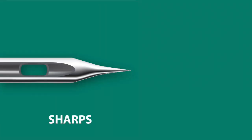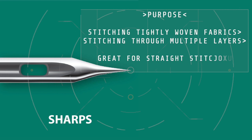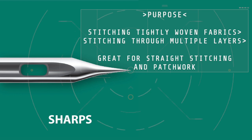The sharp or microtex needle has a sharp point designed for stitching tightly woven fabrics and is ideal for silk, microfiber and other synthetic fabrics. The sharp point gives you a perfect straight stitch, making it an ideal needle for top stitching and patchwork.